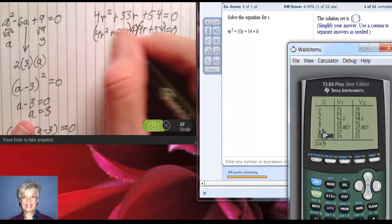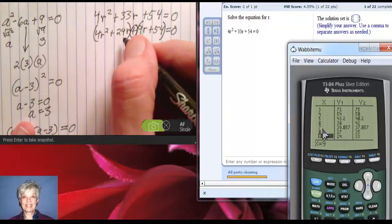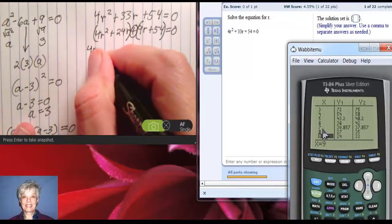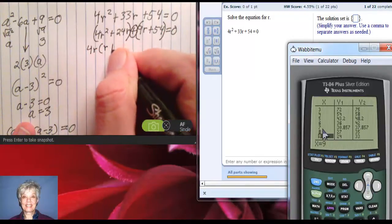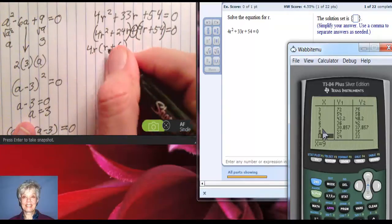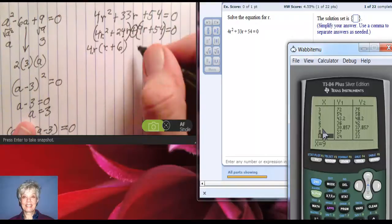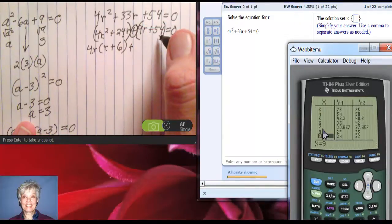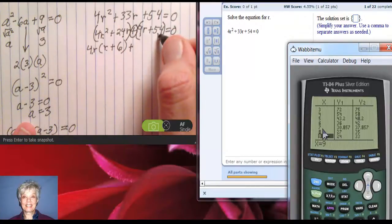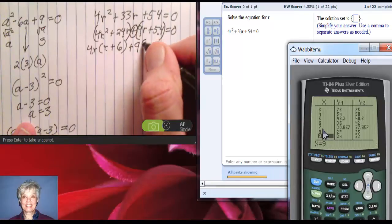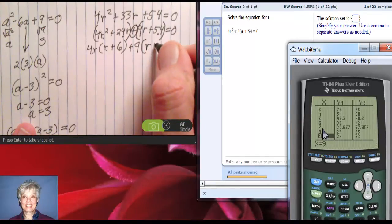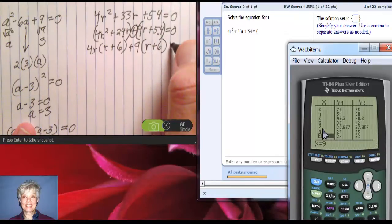Factor the first two terms in the first set of parentheses by the greatest common factor. Pull out a 4r, and we'll have r + 6. Now double check that. 4r times r is 4r², and 4r times 6 is 24r. Now I copy my plus sign, and I factor the second set of parentheses by the greatest common factor, the GCF. And that's going to be 9 because 9 is in both of these numbers. So I pull out the 9, and I'm left with r + 6. And that equals 0.